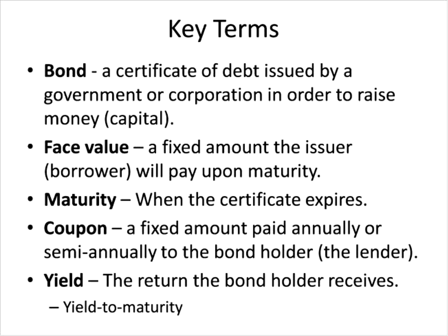The yield on a bond is the return the bondholder receives from his investment. We are interested in yield to maturity, or YTM — that is the return on the investment the bondholder receives if they hold the bond until maturity, expressed as a percentage.